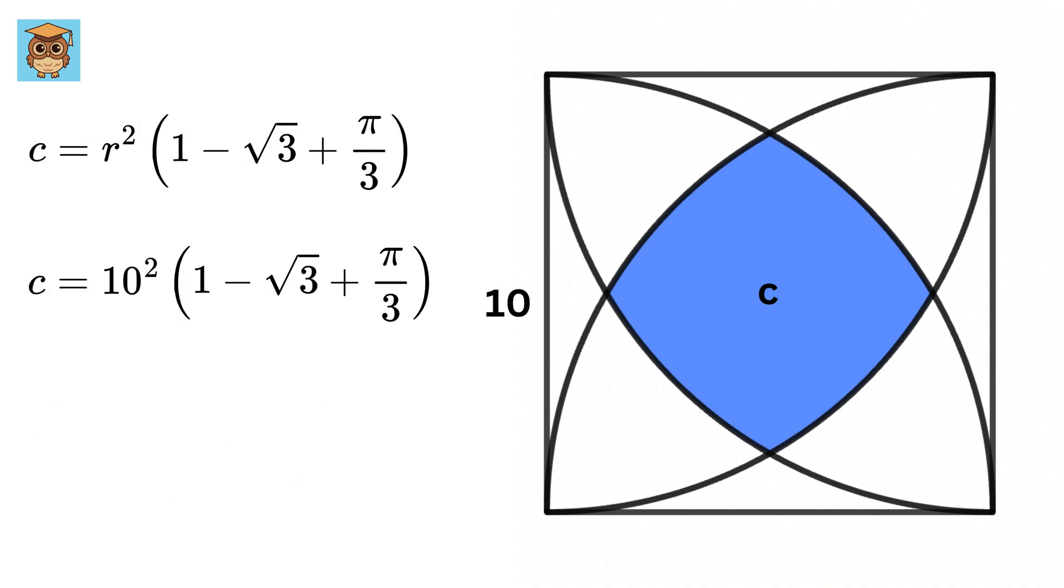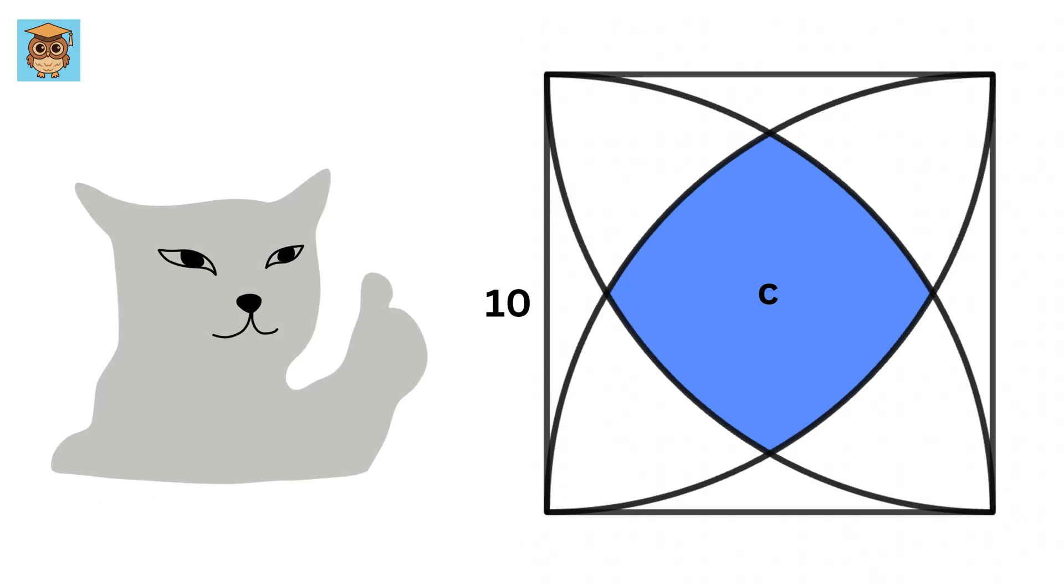Just substitute r as 10, and this will be 100 times this, or in decimal it will be 31.52. Don't forget to put square units. Were you able to solve it? So goooood!